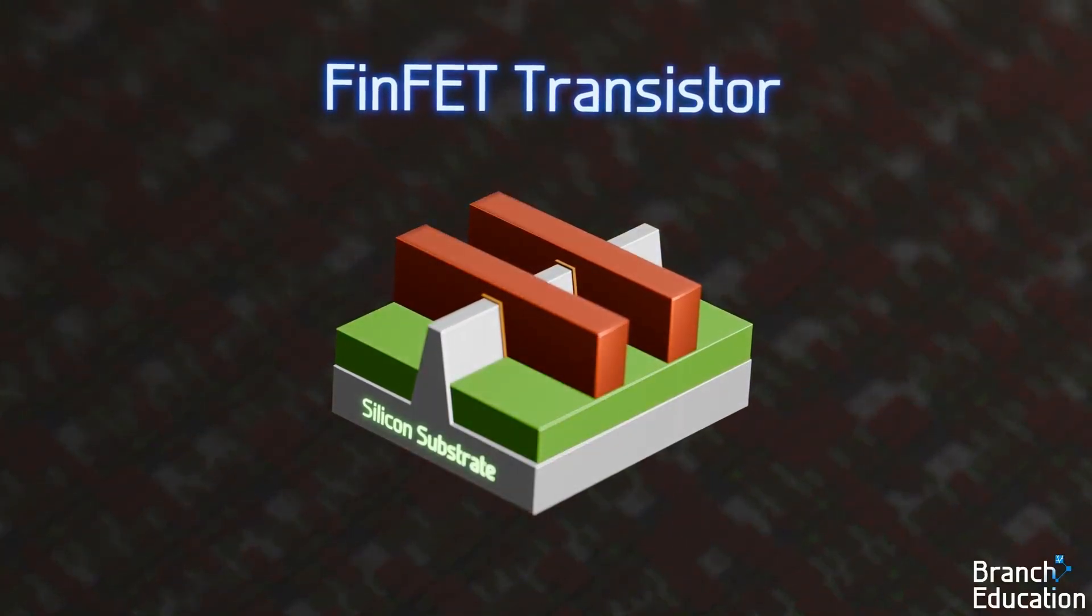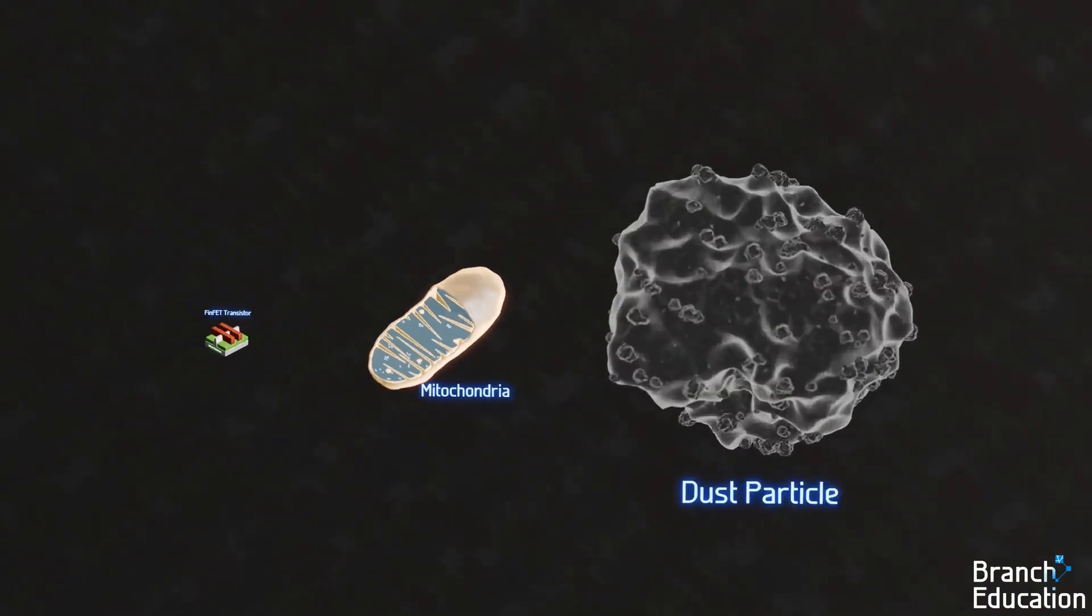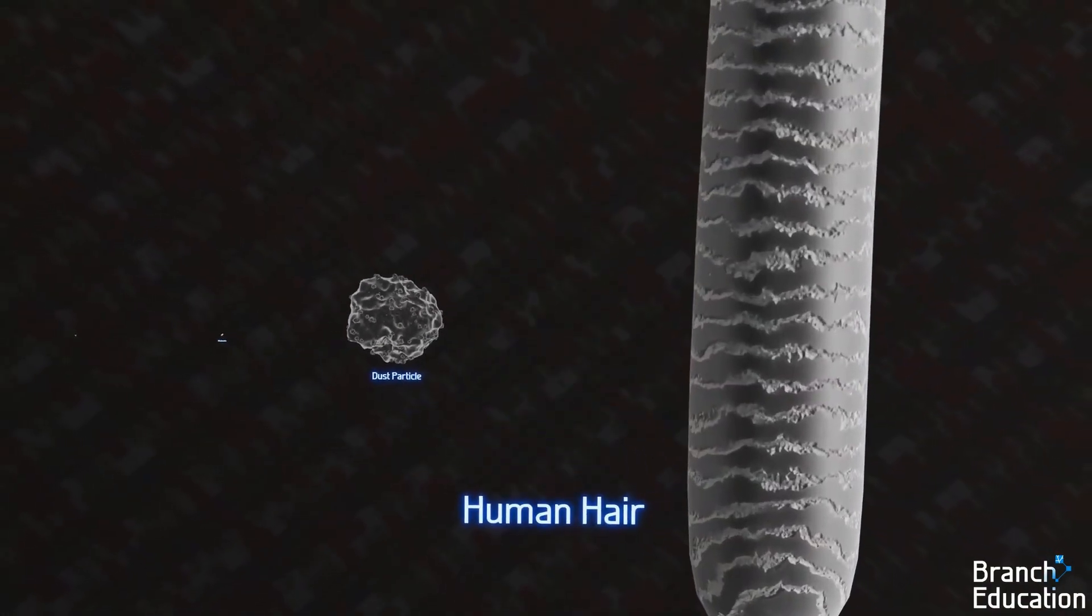Clearly the transistors are incredibly small. Here's a mitochondria, a dust particle, and a human hair for size comparisons.